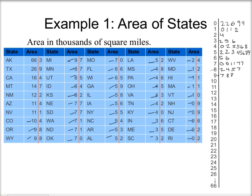For 10, I've got a 4 and a 6. For 11, I've got a 1 and a 4. For 12, I've just got one state with a 2. No 13s — I skip to 14, where I've got a 7. Then I skip to 16, where I've got a 4. Then I skip to 26, where I've got a 9. And finally 66, where I've got a 3.